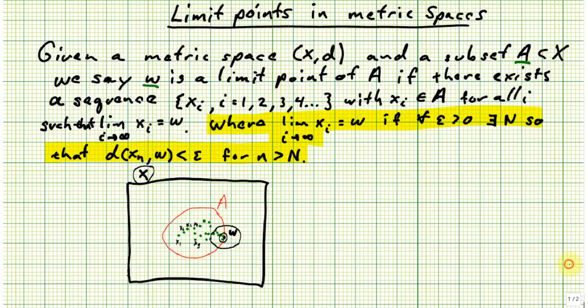Now let me talk a little bit about this definition here where it says, where the limit as i goes to infinity of xi is equal to W, if for all epsilon greater than 0 there exists an n so that the distance between xn and w is less than epsilon for all n greater than n.